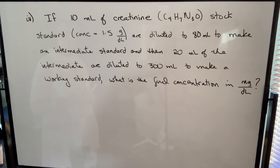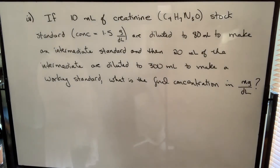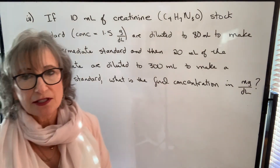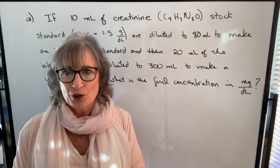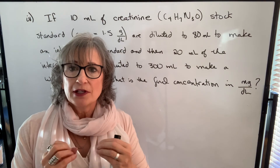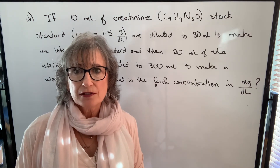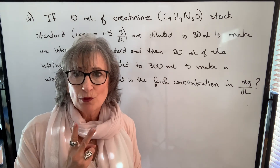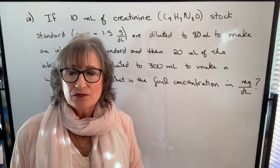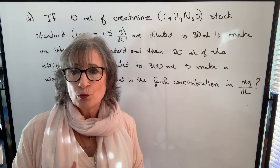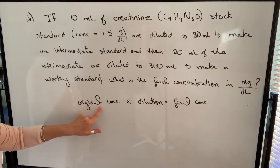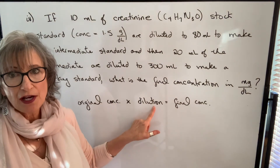In the last example, 10 milliliters of creatinine stock standard at 1.5 grams per deciliter are diluted to 80 milliliters to make an intermediate standard. Then 20 milliliters of the intermediate standard are diluted to 300 milliliters to make a working standard. The question asks for the final concentration in milligrams per deciliter. We could use C1V1 = C2V2 twice, or use a shortcut: multiply the original concentration by both dilution factors.